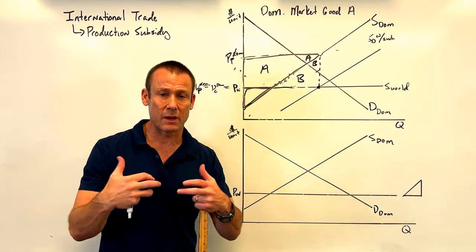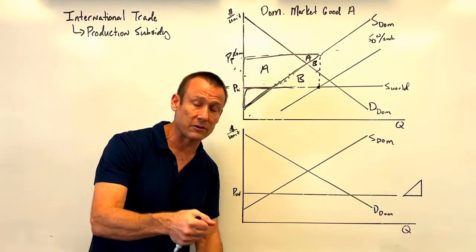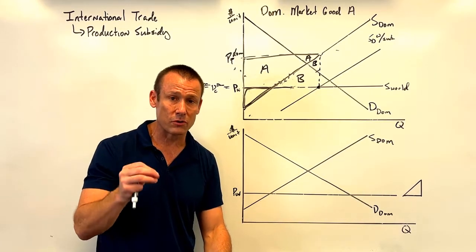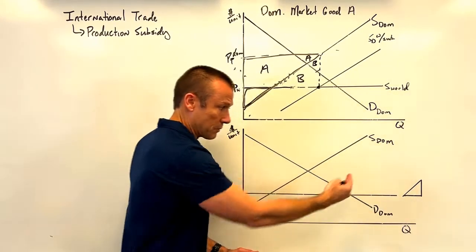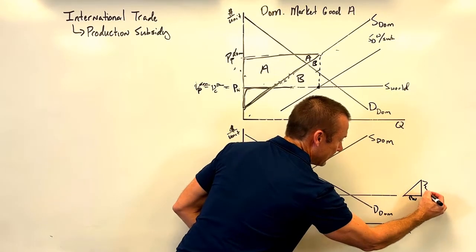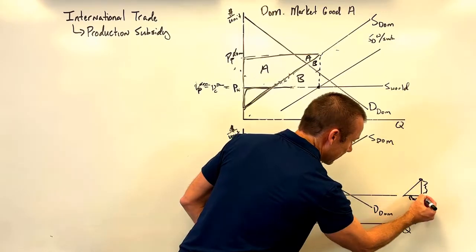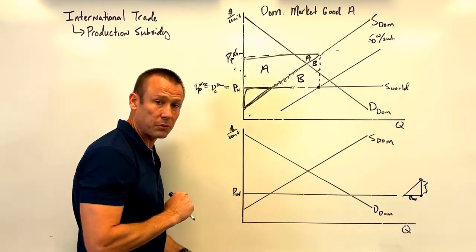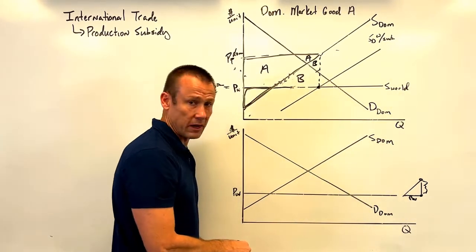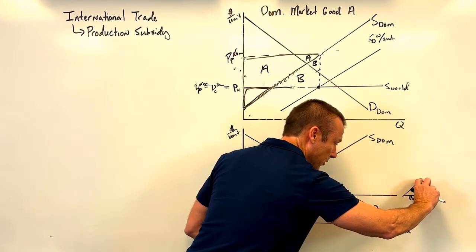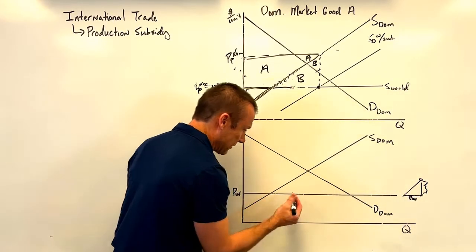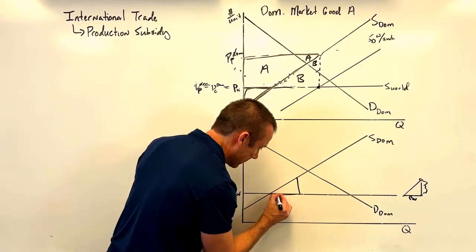A much simpler approach is to not shift the curve at all and instead use a per unit subsidy wedge. Here at Econ Busters, we generally avoid shifting curves for government interventions like per unit subsidies and taxes. With the wedge method, the base sits at price world, the height of the wedge equals the per unit subsidy in dollars per unit, and the hypotenuse follows the domestic supply curve. We simply slide the wedge in at whatever the per unit subsidy is.